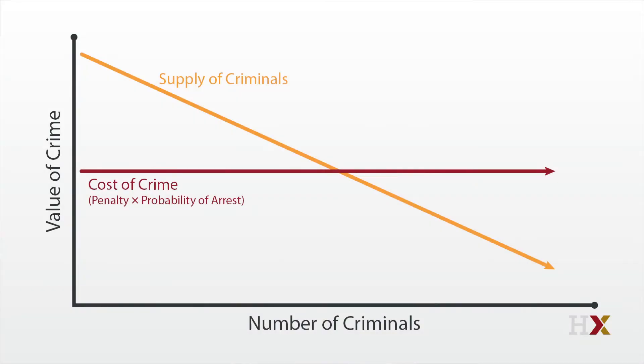The easiest assumption is that the cost of crime is some function of the probability of arrest times the punishment if you are arrested. We can write this here as a horizontal line. This graph predicts that the number of criminals falls as the punishment for crime increases, or if the probability of arrest increases.